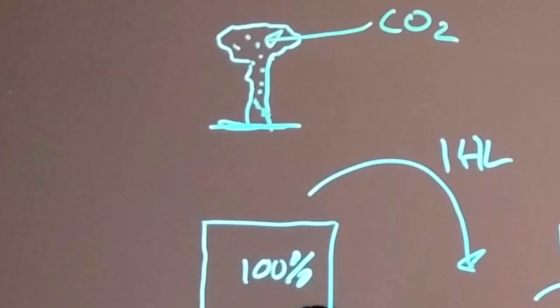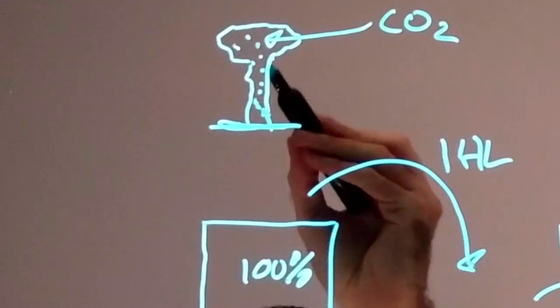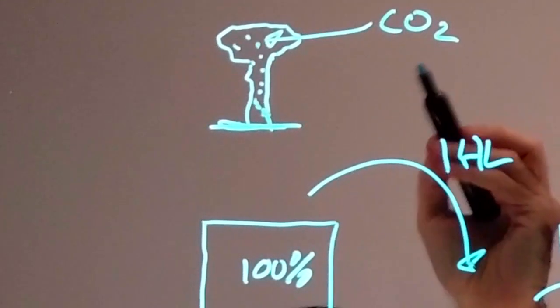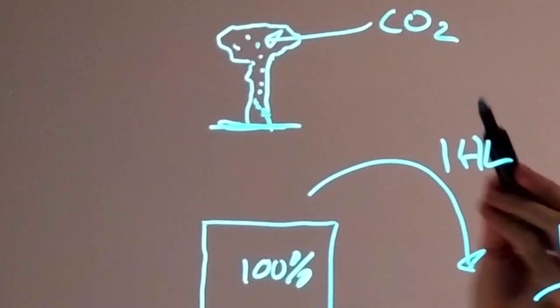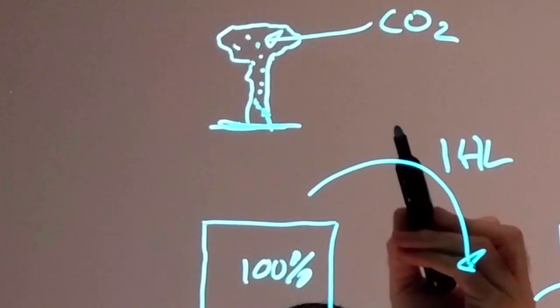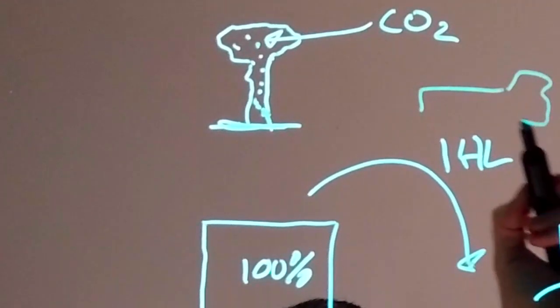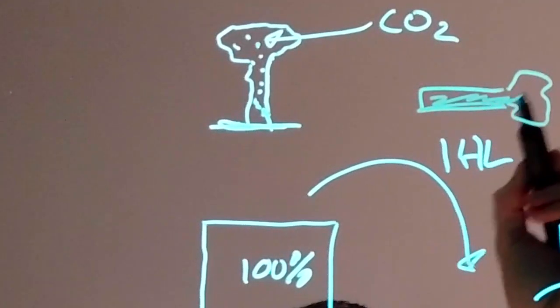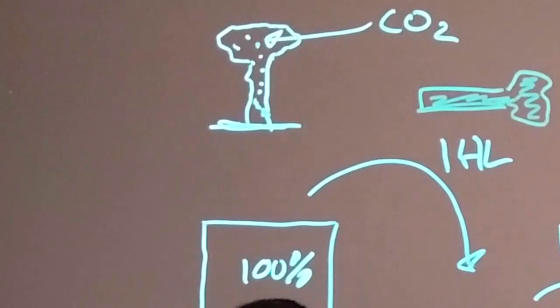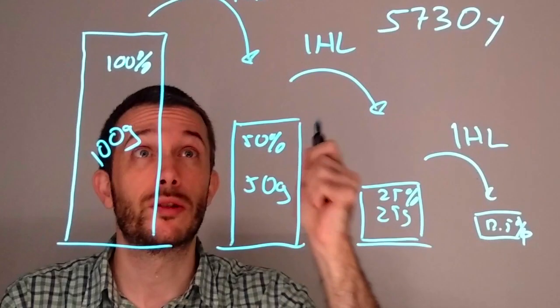Now, as long as the tree is alive and keeps breathing, that amount of C14 in the tree is always about the same as the one in the atmosphere, which is more or less constant. Now, the moment that the tree dies or gets cut, the amount of C14 starts to go down according to the half-life curve.